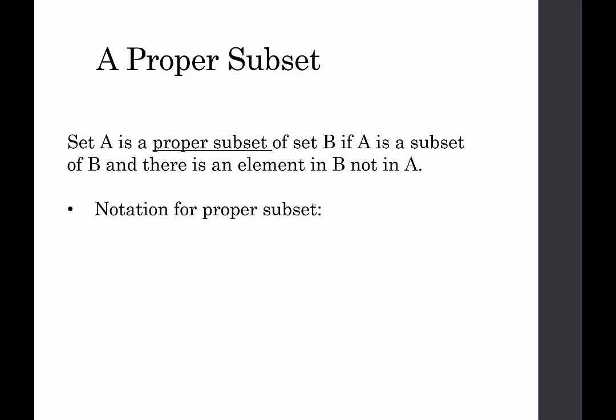The notation for proper subset is we just use this. We don't put the line underneath. So remember how I related that line and that symbol to the less than or equal to? It's like taking away the or equal to and just having the less than. So we would just use that C-looking thing.